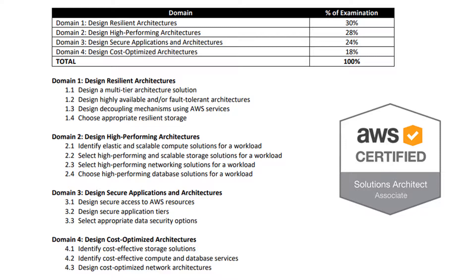Throughout this course, we'll be working hands-on with pretty much all of these different scenarios. Domain two is designing high-performing architectures. Here you'll be able to identify elastic and scalable compute solutions, selecting high-performing and scalable storage solutions, understanding the performance of all of these, working with network solutions for a workload, and choosing high-performing database solutions for a workload.